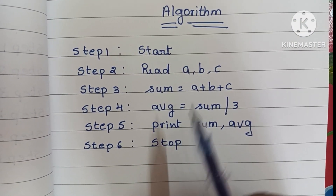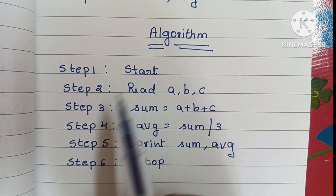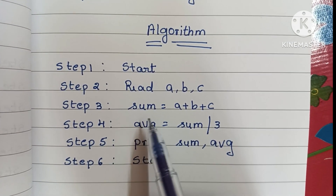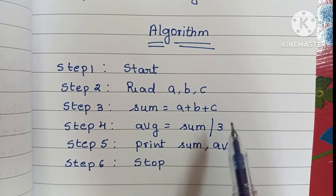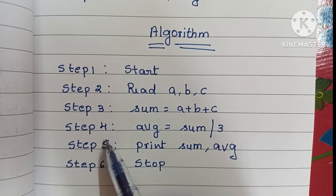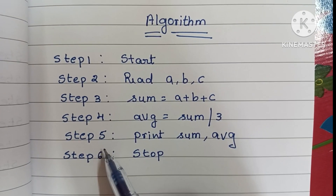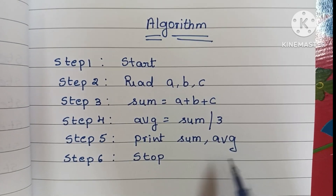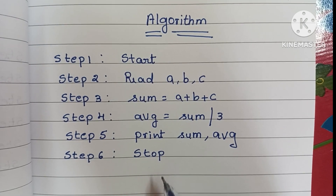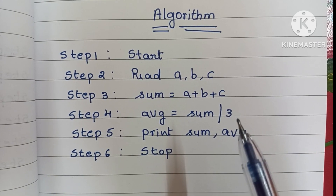Algorithm to find sum and average of three numbers: Step one — write start statement. Step two — read three numbers a, b, c. Step three — sum equals a plus b plus c. Step four — average equals sum divided by 3. Step five — print sum and average. Step six — stop the algorithm using stop statement.